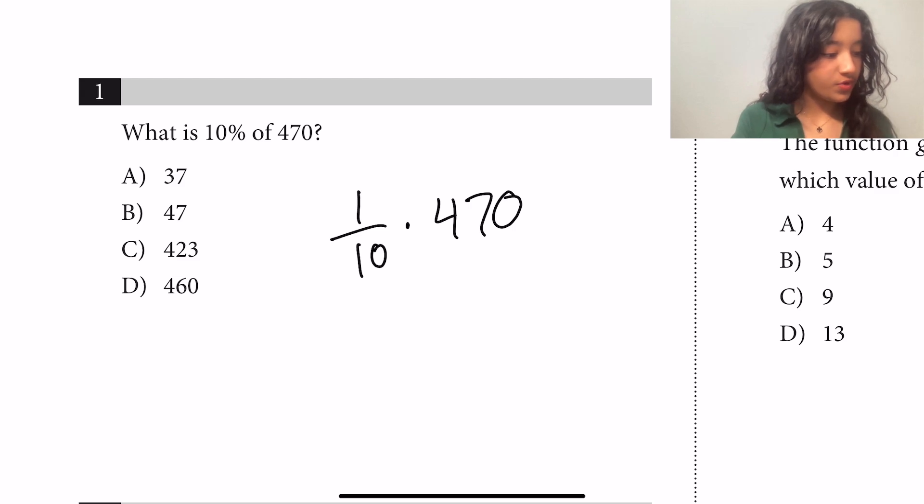So we can cancel out the zero and that gets us that 1 tenth of 470 is 47.